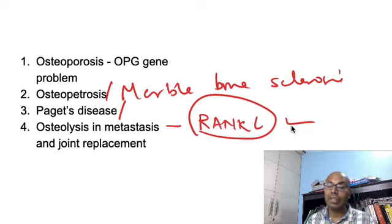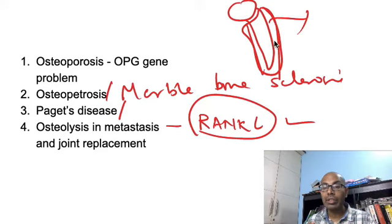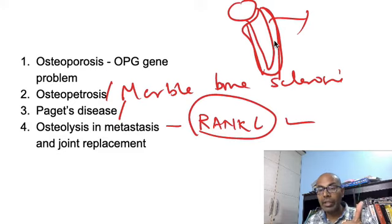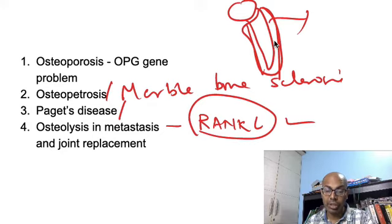The same RANK ligand mechanism causes osteolysis around joint replacements — for example, around the femoral head replacement, a lytic lesion forms due to the RANK ligand pathway. So whether it is cancer or joint replacement, if asked about the cause of osteolysis, the answer is RANK ligand. To briefly recap: we have discussed the RANK ligand pathway in bone metabolism. What inhibits and sequesters RANK ligand? The answer is osteoprotegerin.